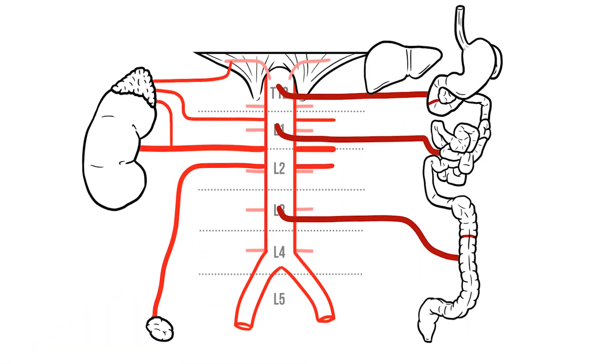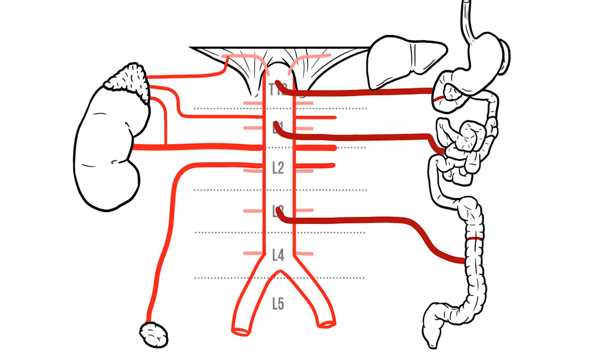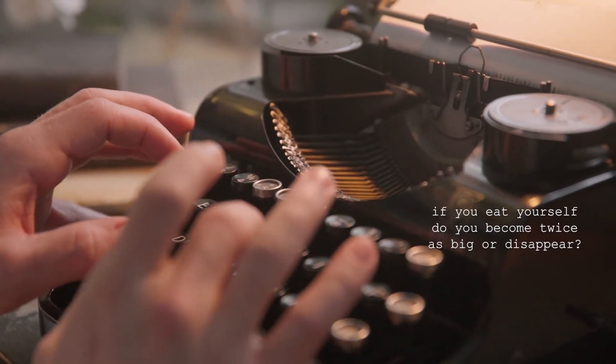So those are the major branches of the abdominal aorta. If you have any questions please just get in touch, but otherwise thank you for watching, take care, and I'll hopefully see you soon.